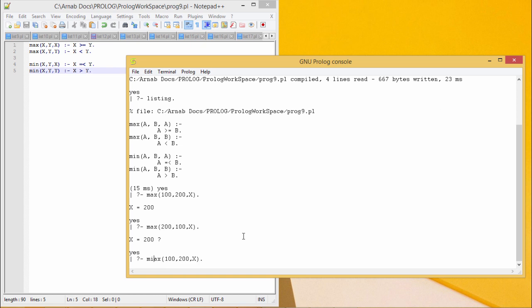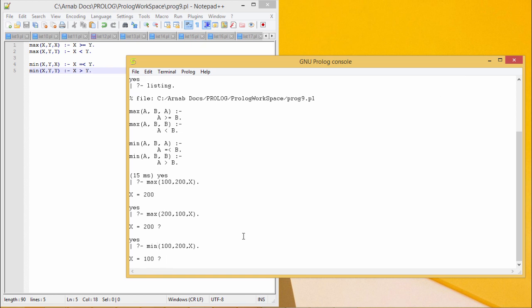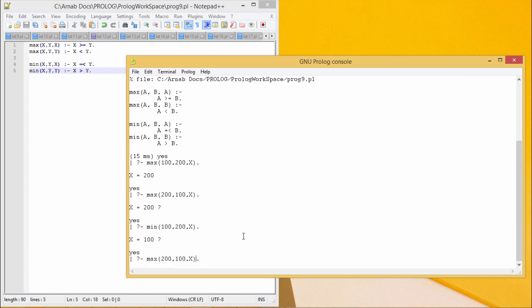Now let me write this one as min. In that case, 100 will be the output. If you write this one as min, then 100 will be the output. In this way, our code has been tested. You can write the maximum and minimum, the respective clause which will find out the maximum and minimum of two numbers. Thanks for watching.